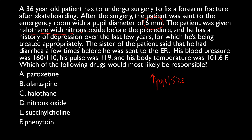He also has a history of depression treated with antidepressants over the last few years, so he's on both inhaled anesthetics and antidepressants — two drug classes associated with two of the three conditions. His sister reports he had diarrhea several times before reaching the ER, indicating increased bowel sounds or GI activity. Vitals: BP 160/110, pulse 119, body temperature 101.6°F — all elevated.